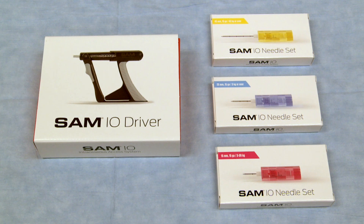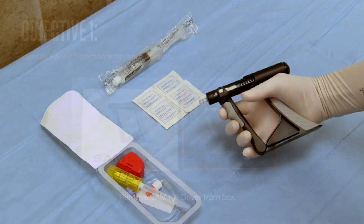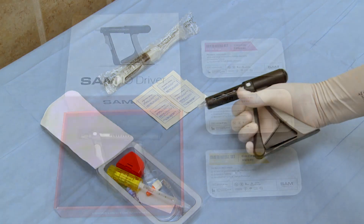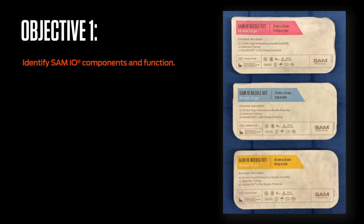The SAM-IO driver, which is reusable, can initially be found in its supplied packaging. Remove the driver from its packaging and repeatedly compress the driver's assembly to appreciate its unique function. SAM-IO needle assemblies are provided sterile in color-coded, size-specific, labeled packaging. Standard sizes include a pink 15-millimeter 15-gauge needle assembly, a blue 25-millimeter 15-gauge needle assembly, and a yellow 45-millimeter 15-gauge needle assembly.